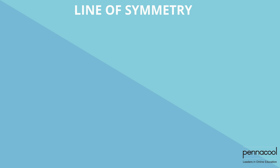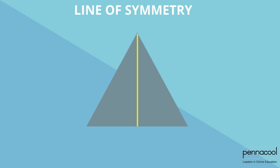Let's look at some regular plane shapes. A regular triangle has three sides of equal length. We can draw three lines of symmetry in this shape.